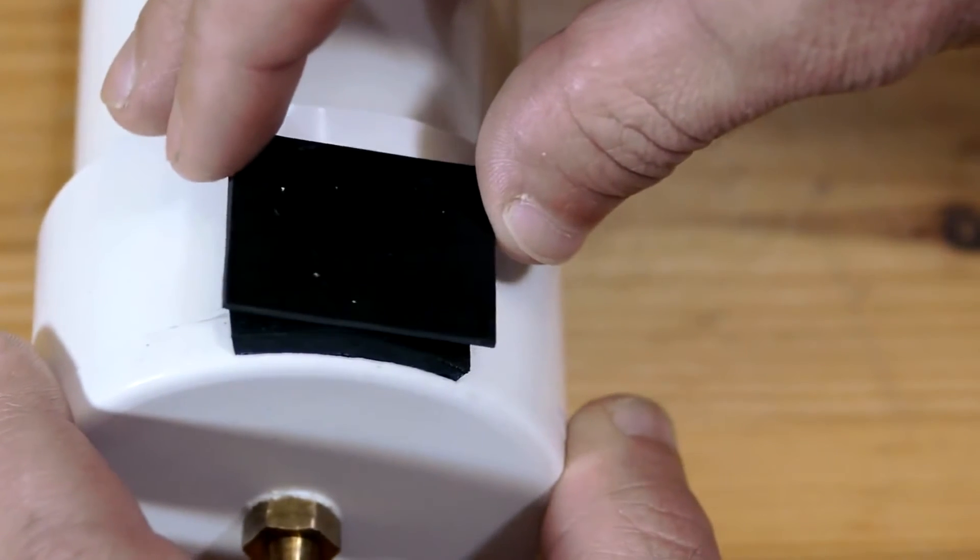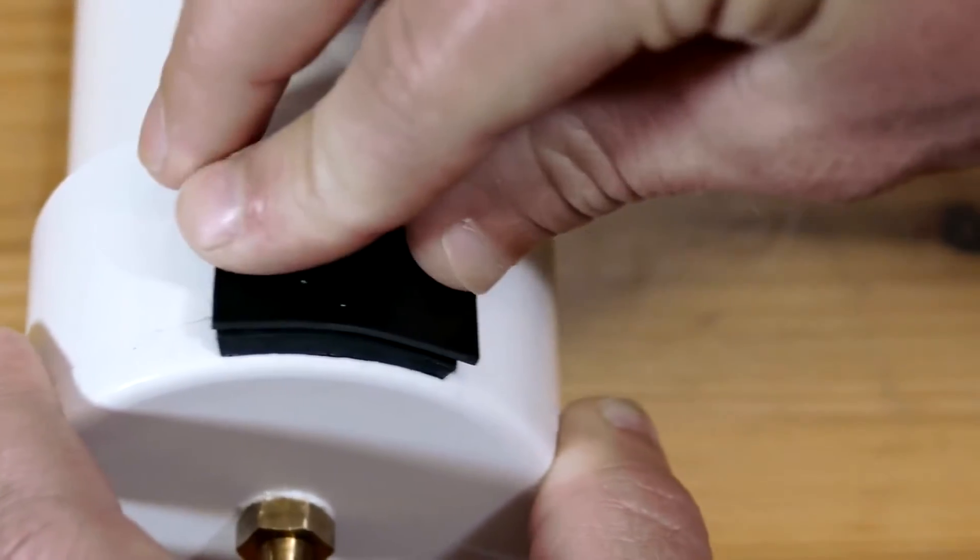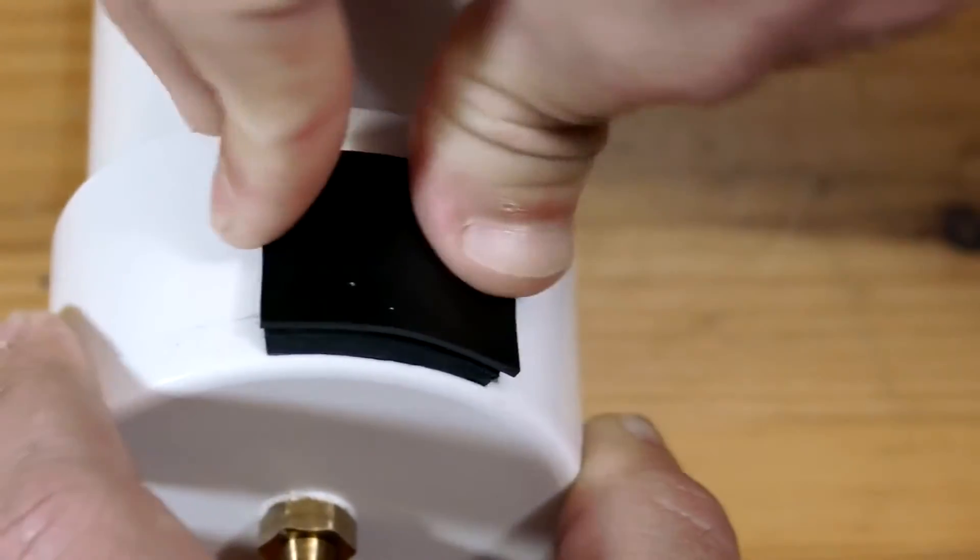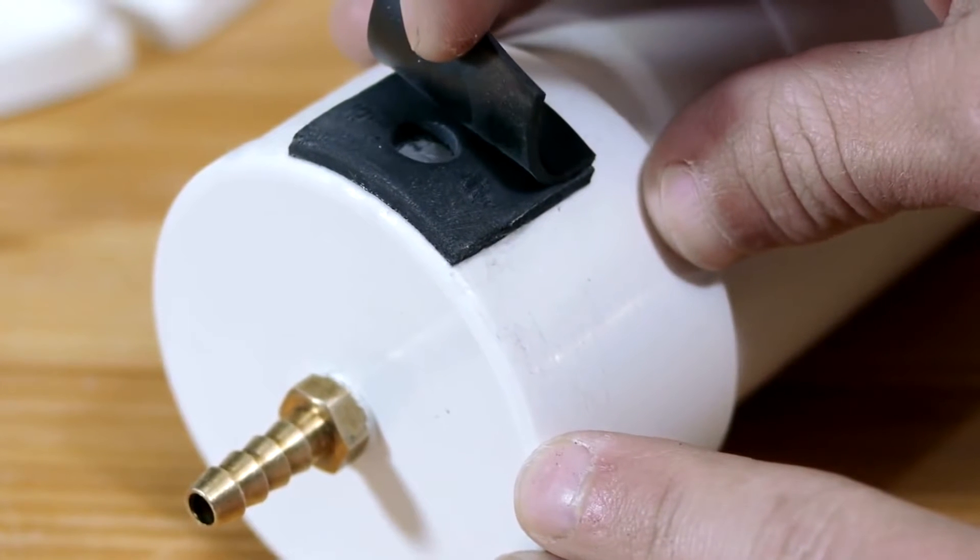I found that for the top sheet on this valve, thinner 1/16 inch sheet rubber works best, but the same rubber as before will do if thinner sheet is not available.